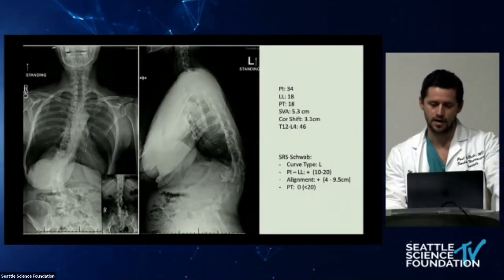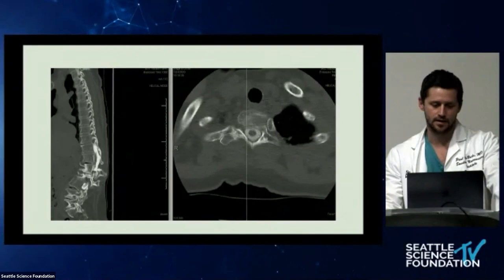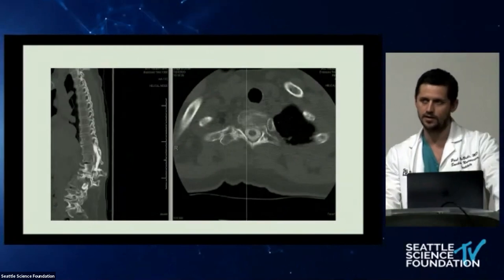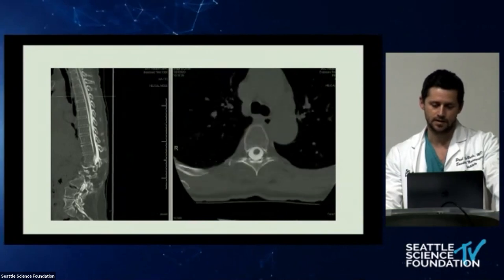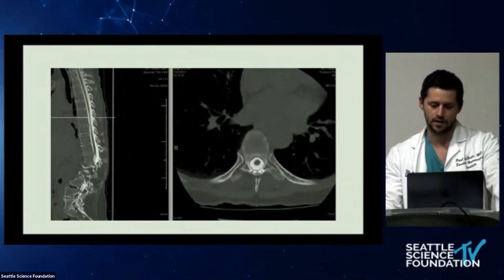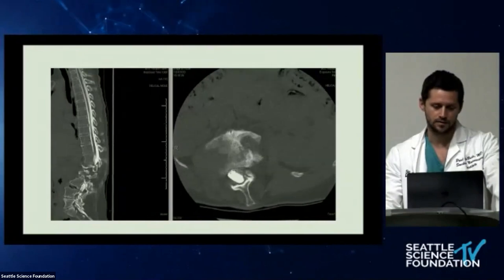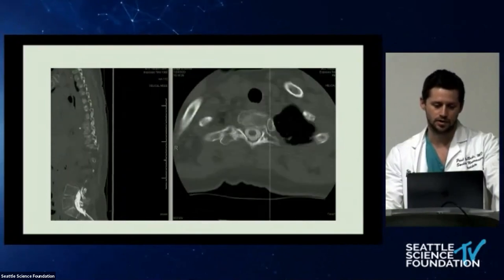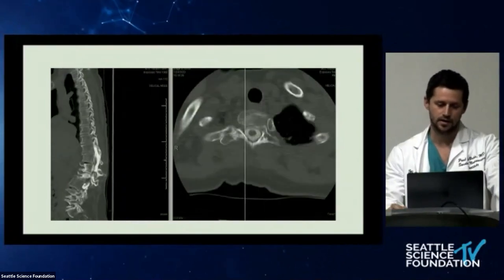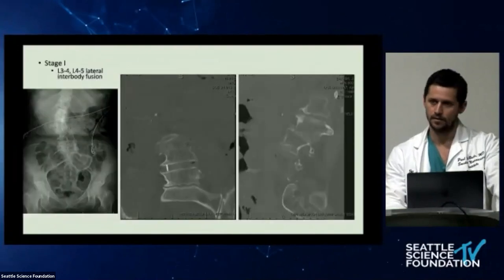CT myelogram showed no significant areas of stenosis, but expected facet arthropathy, neural elements shifted toward the concavity, and reactive osteophytic changes — most notably at the thoracolumbar junction — with osteophytic changes and vacuum disc phenomenon. Her bone density was minus 1.5.